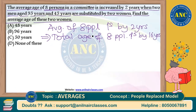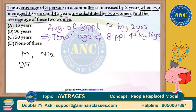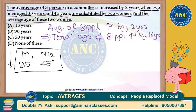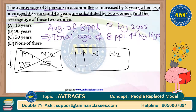Now, when is this average of 8 people increasing by 2 years? This increase is happening only when 2 men aged 35 and 45 years are substituted by 2 women. That means these 2 men are going out of the class and are replaced with 2 women. Because 2 men are going out and 2 women are coming inside, the total sum is increasing by 16 years.